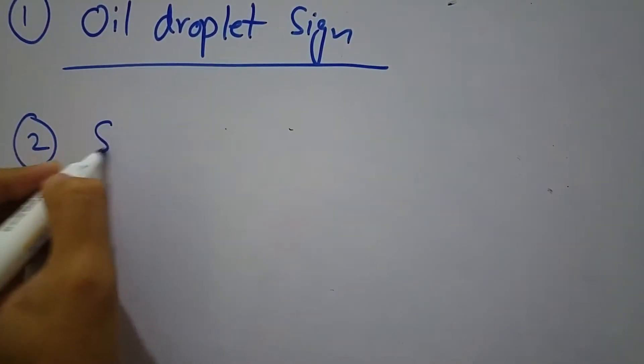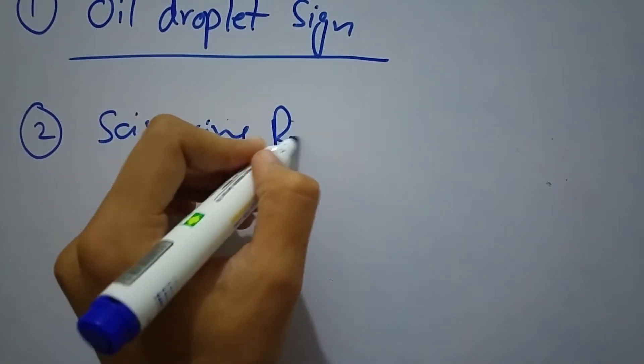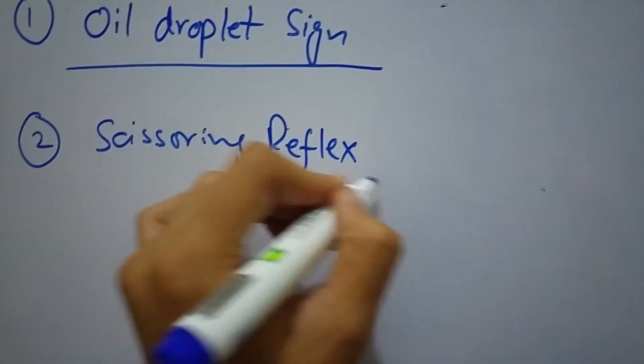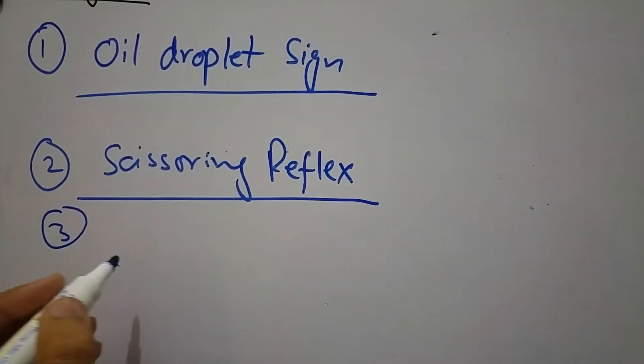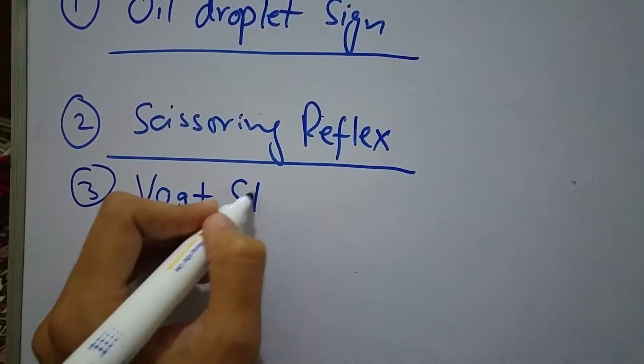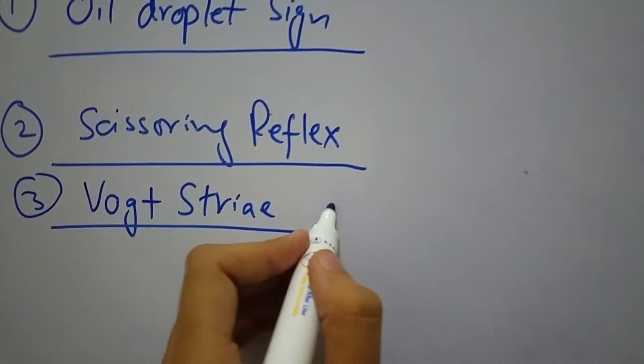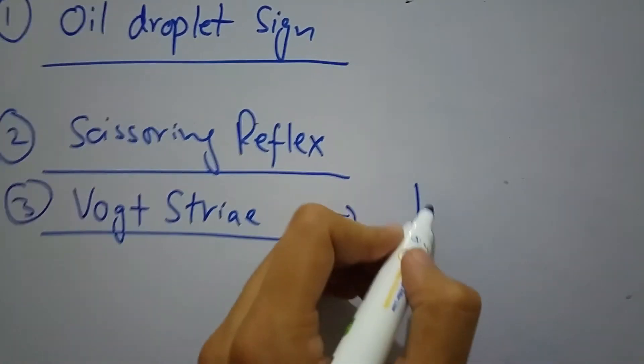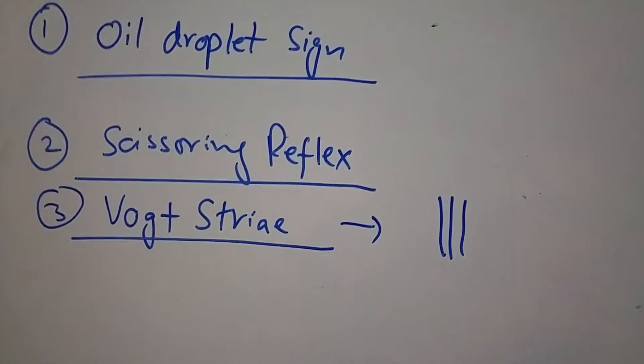Number two is scissoring reflex. It is seen during retinoscopy. Number three is Vogt's striae. Vogt's striae are deep vertical stromal lines that are seen during slit lamp examination.